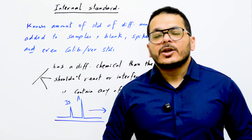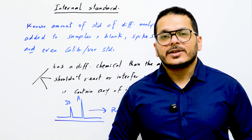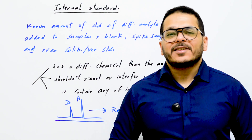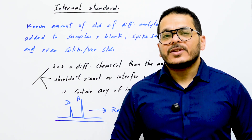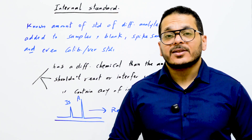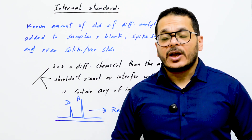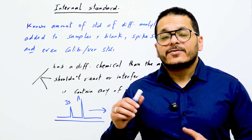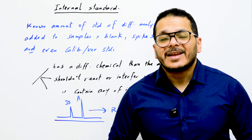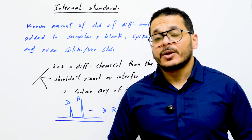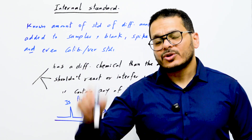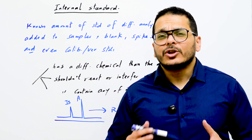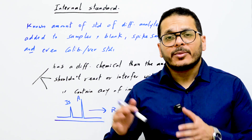Hey everyone, welcome back with a new lecture in the quality control and quality assurance training course. In the previous lecture, I explained the matrix effect and what you can do if there is interference from the matrix on target analytes by enhancement or suppression. The first solution was to prepare a matrix-matched calibration curve — to prepare your calibration on the matrix itself — which is very difficult and mostly will not be as accurate as preparing calibration standards in solvent.